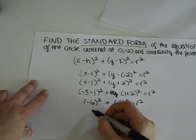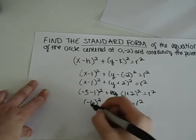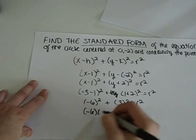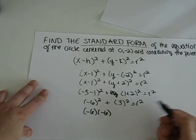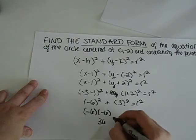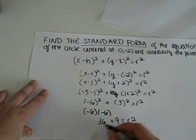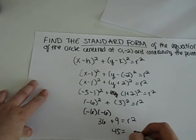Just because it's a negative doesn't mean it's going to be negative in the answer just because you're squaring it. So really it's -6 times -6, and negative times a negative equals a positive. So that becomes 36 plus 9 equals r squared. So if you add the two together, 45 equals r squared.